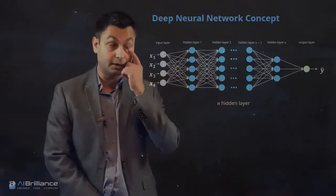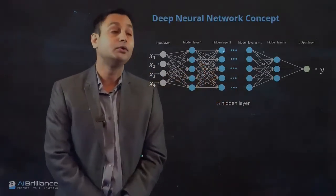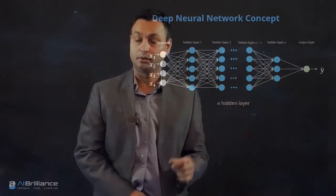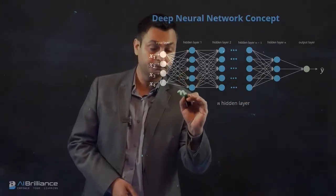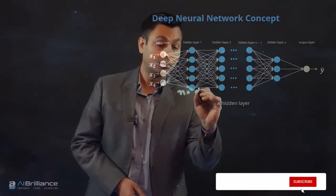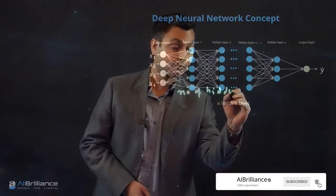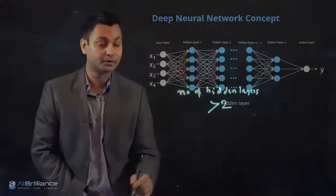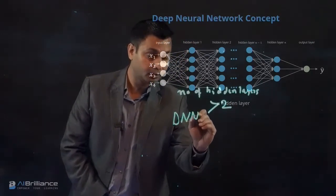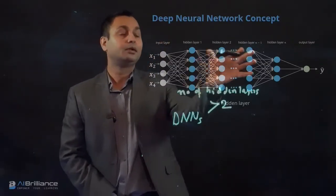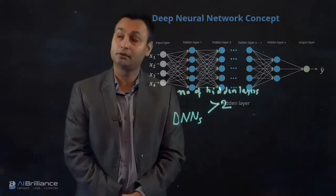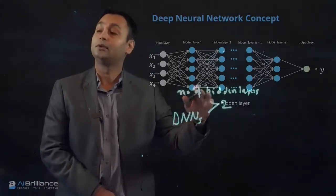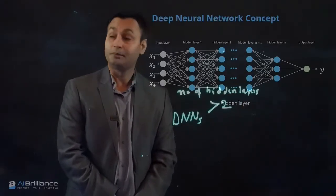Instead of having a single hidden layer, you essentially can have multiple hidden layers in the neural network. So if the number of hidden layers are greater than two, you essentially have what is known as deep neural network. Deep, shallow and depth is basically how many hidden layers do you have. If you have only one hidden layer, you are shallow neural networks. If you have more than two, then you have deep neural network.